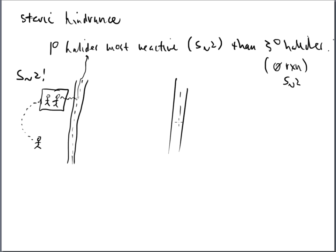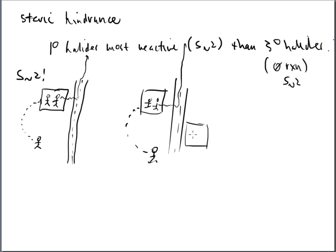Now let's take that same street but say there's a house next door. As you can imagine, if you're trying to keep this a secret, you've got to worry a little bit now — there's a peeper next door always watching what goes on up and down the street. This cheating scenario is going to be a little riskier. Something else is there, something else is going to slow down the cheating. SN2 slows down quite a bit.